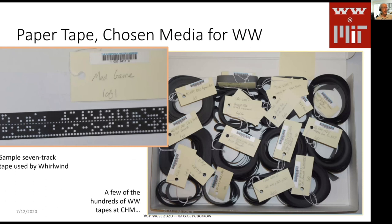Paper tape was the medium for Whirlwind. They used 7-track tape and a machine called a FlexoWriter to punch the tape, read the tapes and print, and later in the program to type commands into the computer. For the most part, the machine was operated as one might expect from an analog computer background — buttons and switches and knobs and lights — but eventually developed something that was kind of like an operating system.